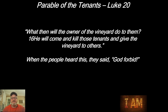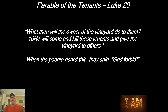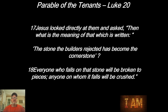So Jesus turns and asks the teachers of the law — the ones he's challenging with this parable — 'What then will the owner of the vineyard do to them?' And he answers without waiting. He said, 'He will come and kill those tenants and give the vineyard to the others.' When the people heard this, they said, 'God forbid — that wouldn't happen.' And Jesus continues in verse 17: he looked directly at them and asked, 'Then what is the meaning of that which is written? The stone the builders rejected has become the cornerstone. Everyone who falls on that stone will be broken to pieces. Anyone on whom it falls will be crushed.'